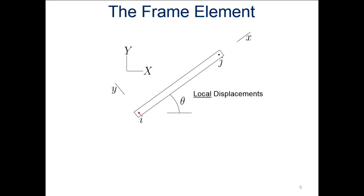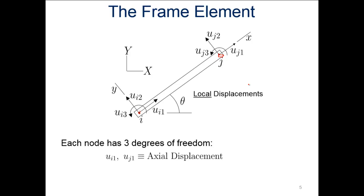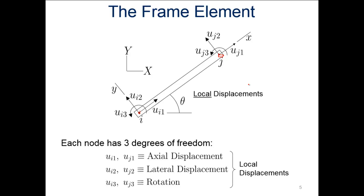Looking at a frame element, we have the overall member between nodes I and J. The local displacements are: U sub I1 — the axial displacement at node I; U sub I2 — the lateral displacement in the y direction; and U sub I3 — the rotation at node I. So one is axial, two is lateral, and three is rotation. The same applies at node J. Each node has three degrees of freedom: axial displacement, lateral displacement, and rotation — all in local coordinates indicated by lowercase letters.